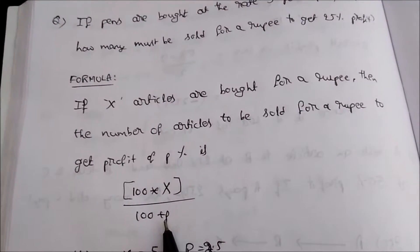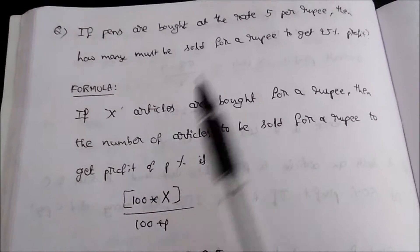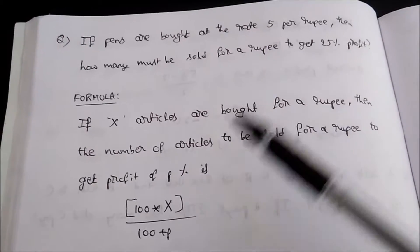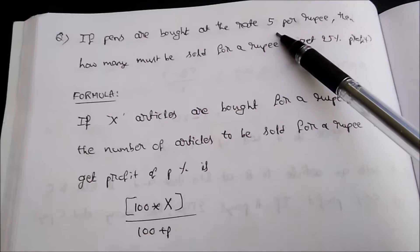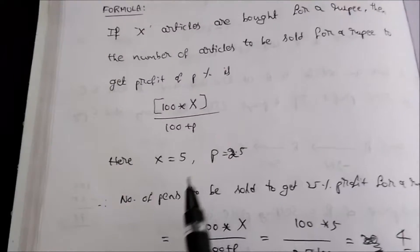From the question we can see that the P value is 25 and X value is 5. Now when you substitute here you will get the exact output.